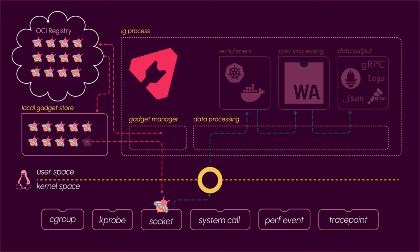Once it's in the local store, the gadget manager can load this into the kernel. In this case we are attaching to a socket. When it loads the BPF program, it also creates a BPF map. Once that's loaded, it's waiting for an event; when an event does happen, it loads that into the map. Inspector Gadget then pulls out that information and sends it to the enrichment processes, which enrich it with information about Kubernetes and the container runtime — supporting Docker, containerd, etc.